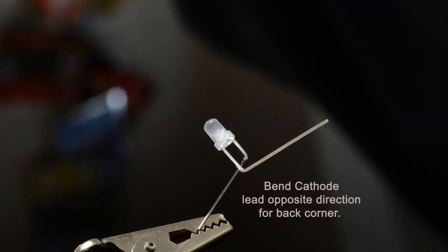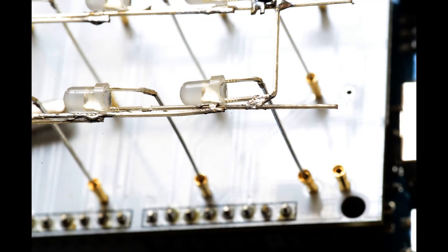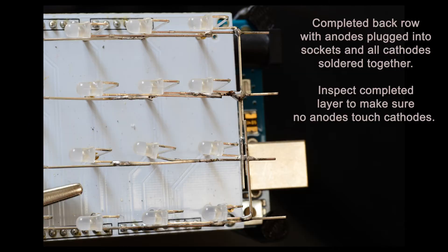For the opposite back corner, bend the cathode lead in the opposite direction and solder to the other cathodes in that same layer. Here is what the completed back row looks like. I did not snip the LED leads off the back as I wanted to use them later.